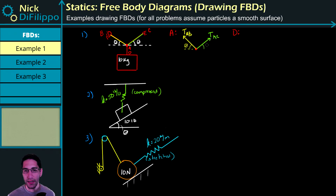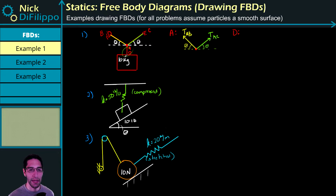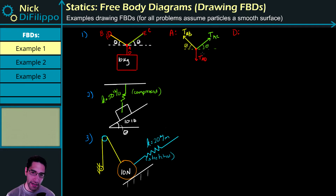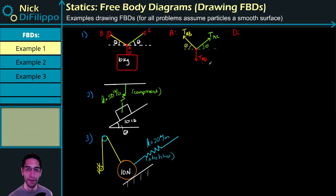T_AC also has an angle of theta and it's in tension. Then finally we have this rope that goes from A to D straight down, and we'll call this tension T_AD. The naming convention I'm using for tensions is from where I start to where I end. So that is the free body diagram of point A.